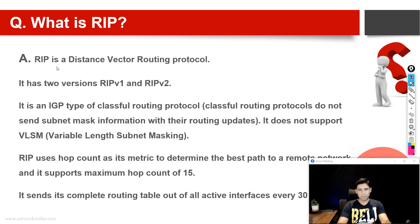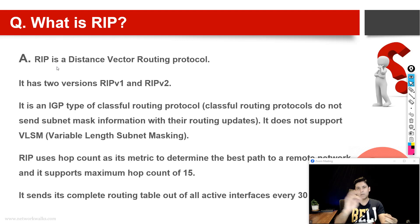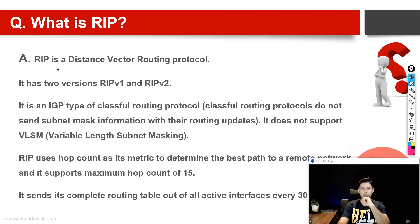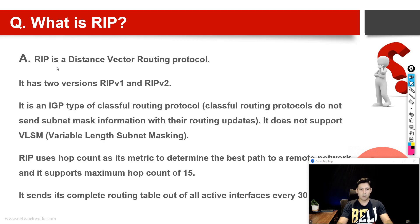RIP version 2 supports VLSM — variable length subnet mask — which means not only slash 24, but also slash 25, 26, 27 onwards. Version 1 does not support this. RIP uses hop count as its metric, meaning how a routing protocol decides which path to take from source to destination when multiple paths exist — it chooses the path with the fewest hops.